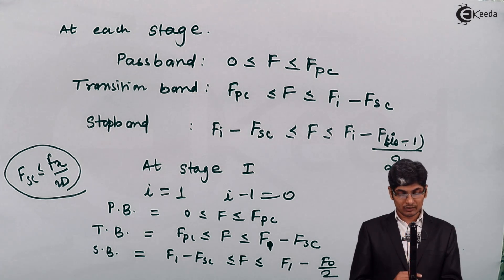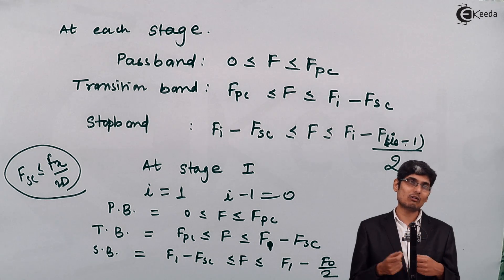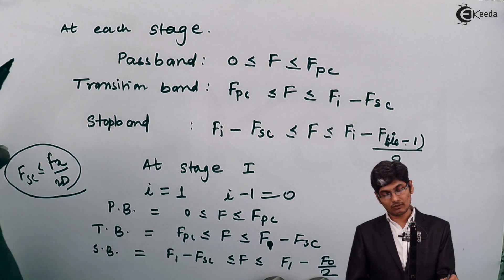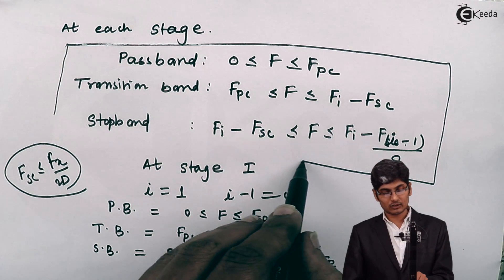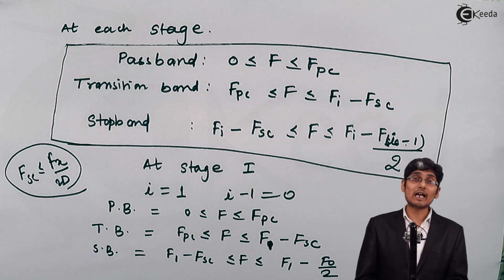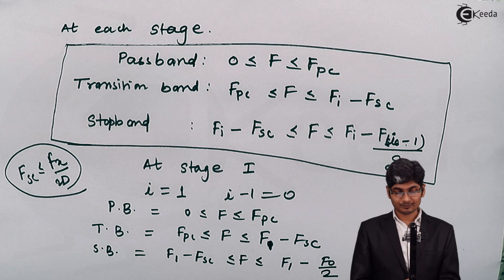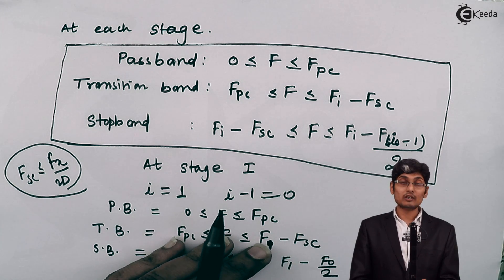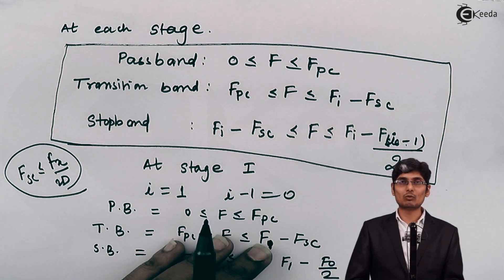The most important piece of information to always keep in mind is the set of formulas written here. These formulas should never be forgotten, because a large number of design problems are based on them. I hope you have understood what multi-stage implementation of a sampling rate converter means.